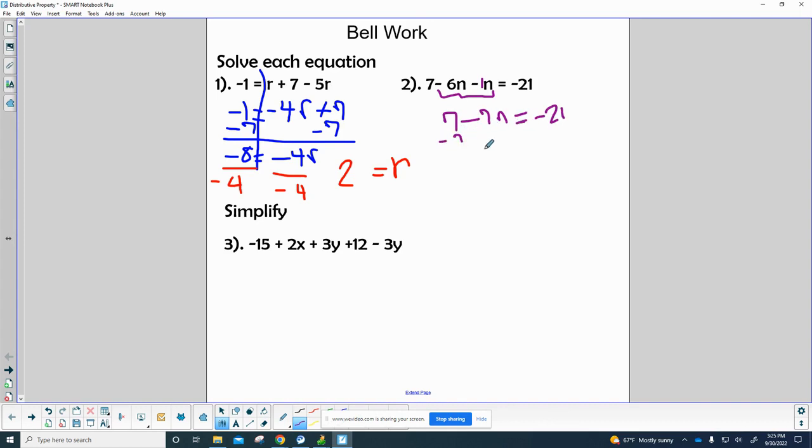Then we're going to minus 7 from both sides and we end up with negative 7n equals negative 28. To solve that, we're just going to divide both sides by that negative 7 in front of the n, and 28 divided by 7 is 4. Negative divided by negative is a positive, so we end up with n equals 4 in this case.